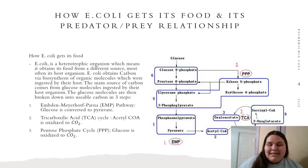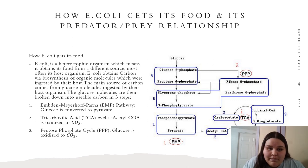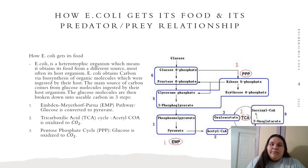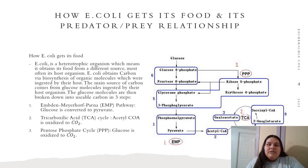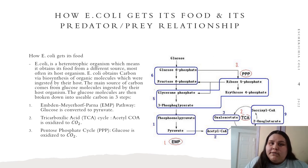E. coli is a heterotrophic organism, which basically means that it receives its food from another source, also known as its host organism. E. coli obtains carbon via biosynthesis of organic molecules which were ingested by their hosts. The main source of carbon comes from glucose molecules, which were ingested by their host organism and are later broken down into usable carbon in three different steps.